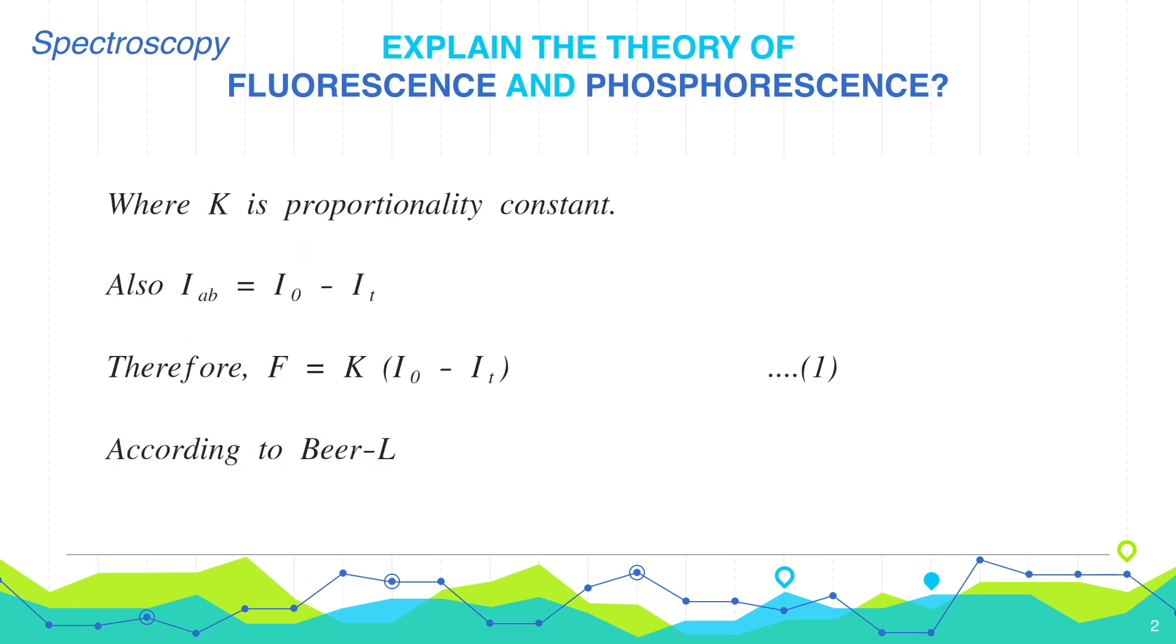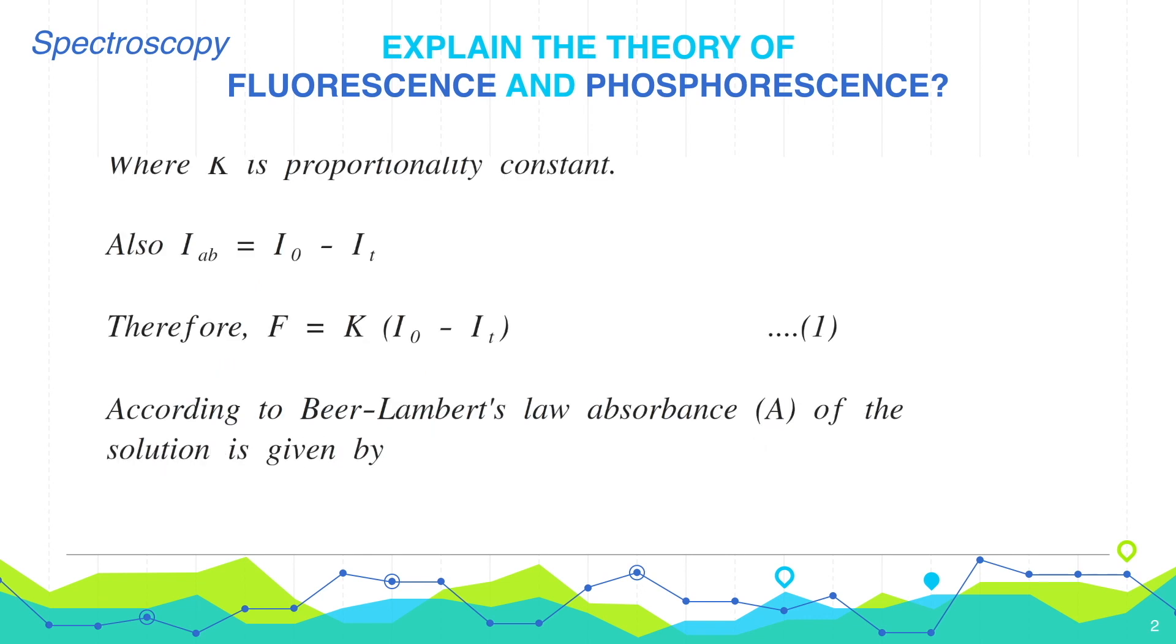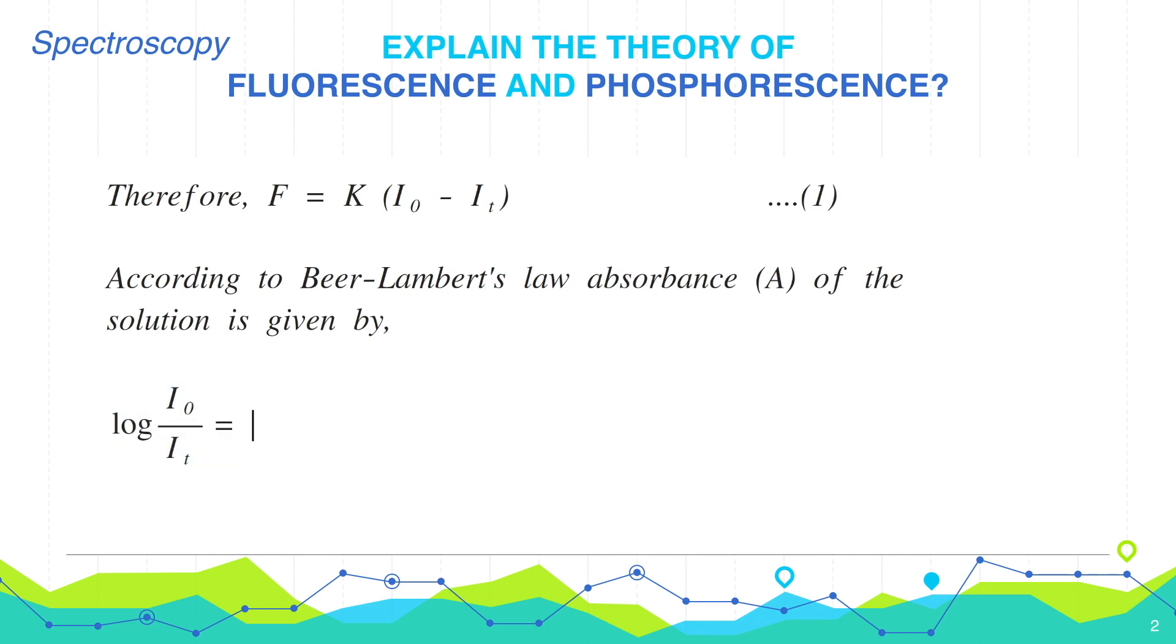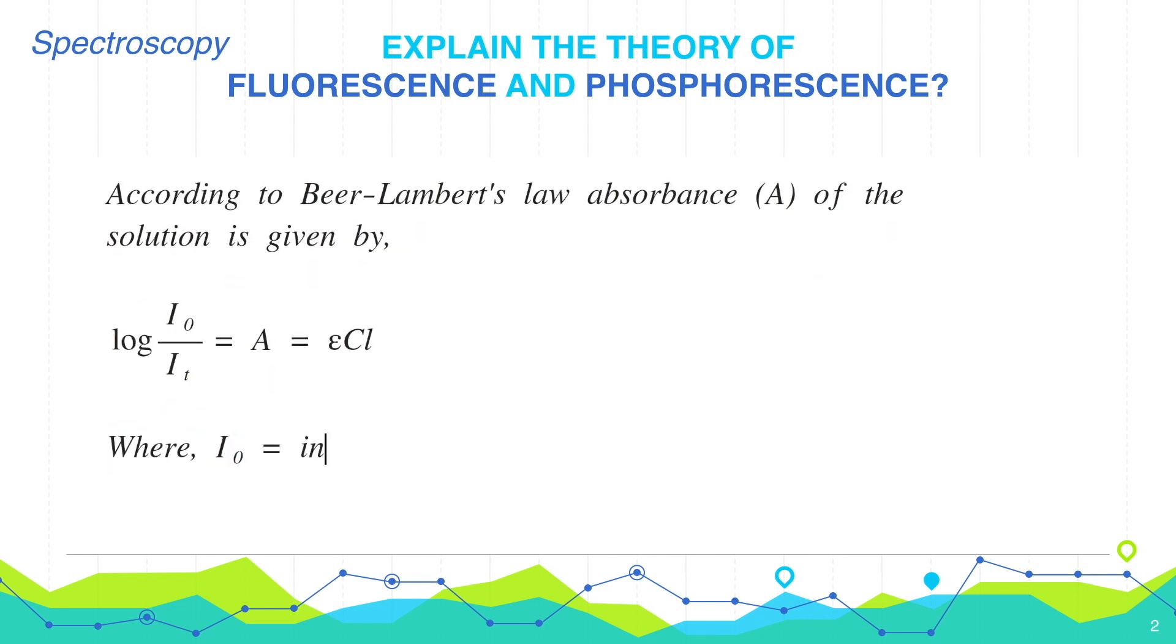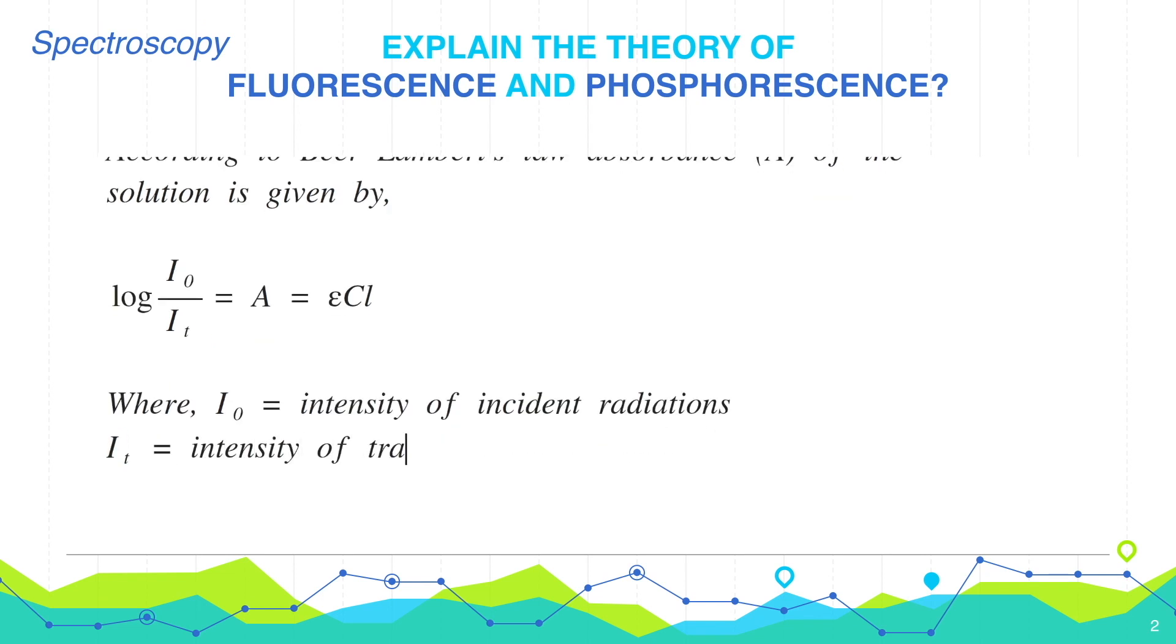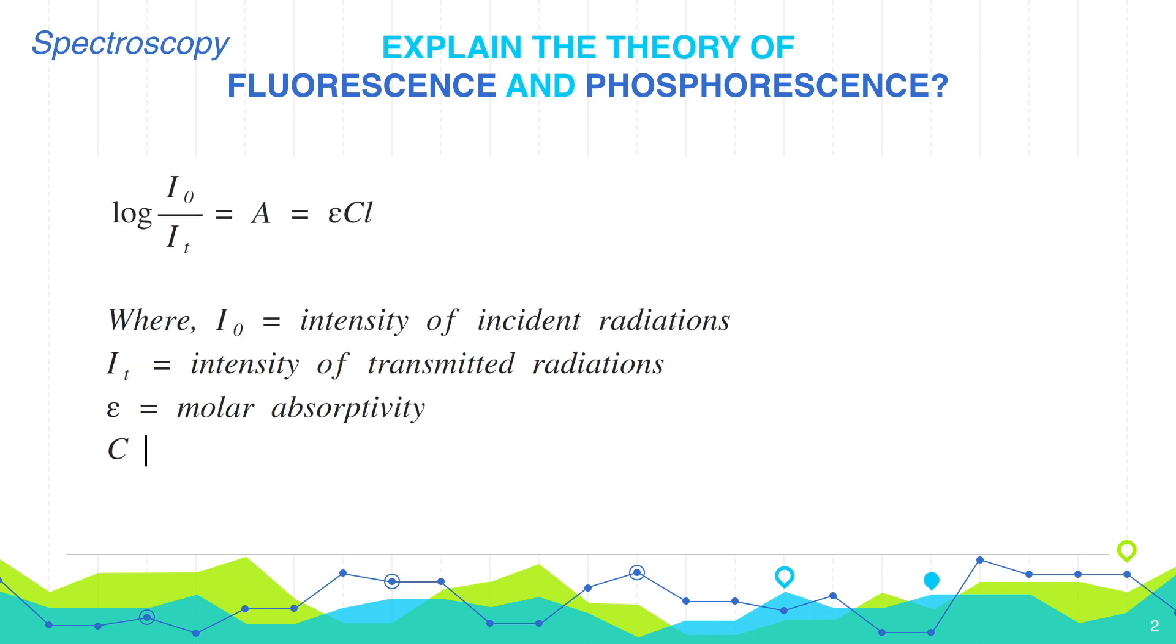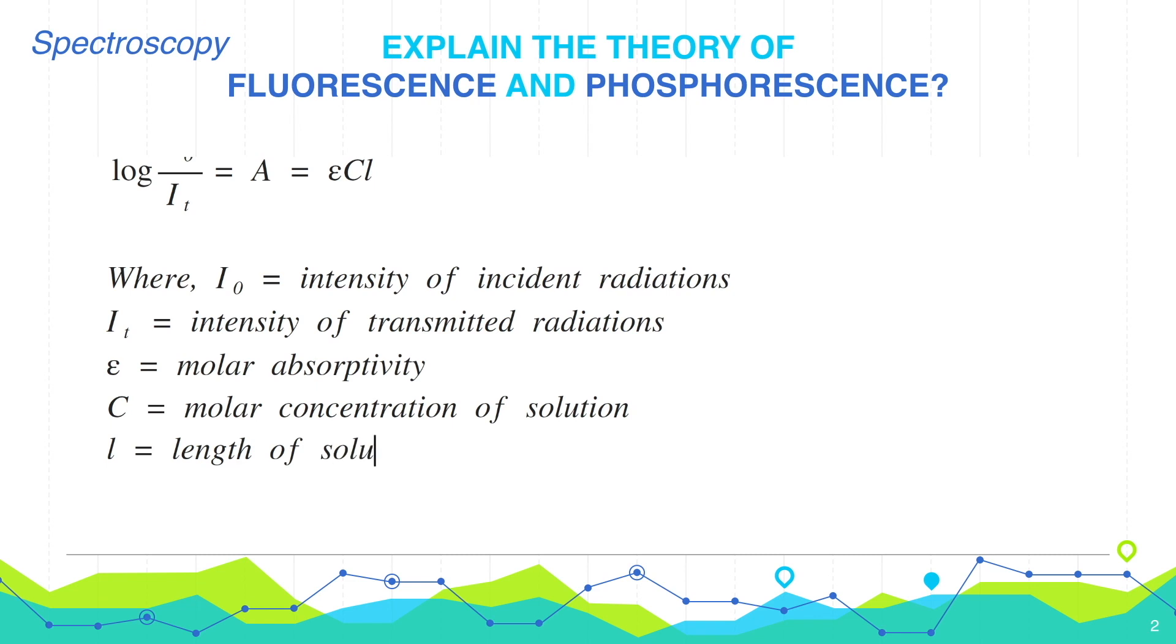According to Beer-Lambert's law, the absorbance A of the solution is given by log of I0 by It equals absorbance A equals epsilon C L, where I0 is the intensity of incident radiation, It is intensity of transmitted radiation, epsilon is molar absorptivity, C is the molar concentration of the solution, and L is the length of the solution.